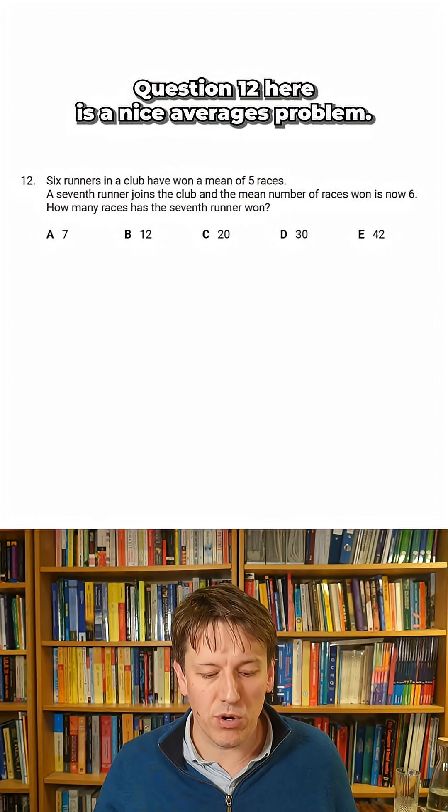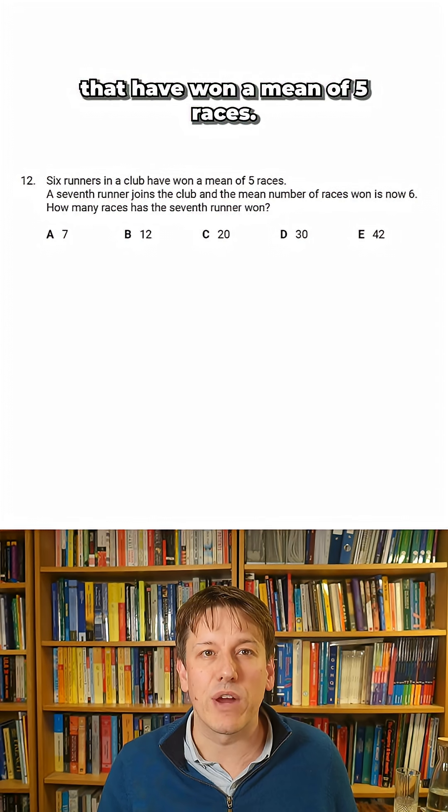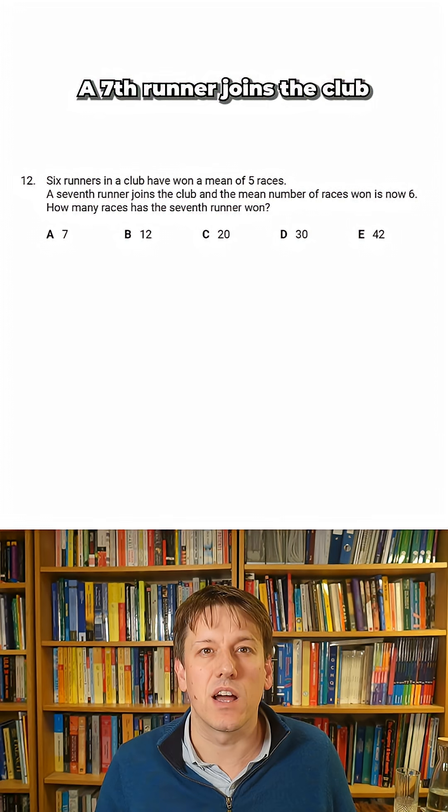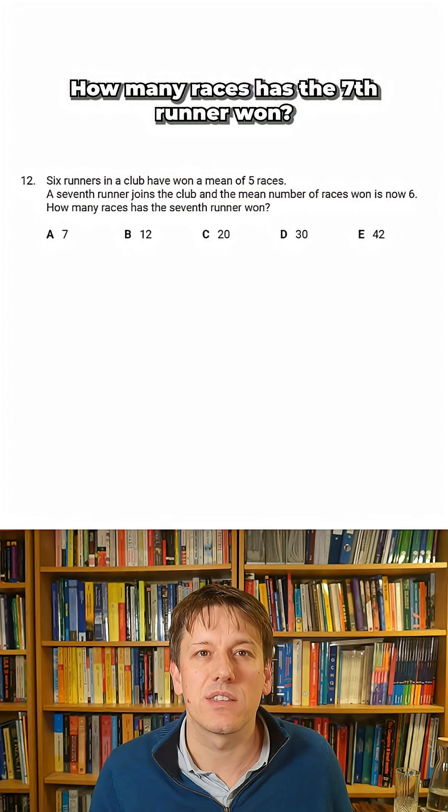Question 12 here is a nice averages problem. We've got six runners in a club that have won a mean of five races. A seventh runner joins the club and the mean number of races won is now six. How many races has the seventh runner won?